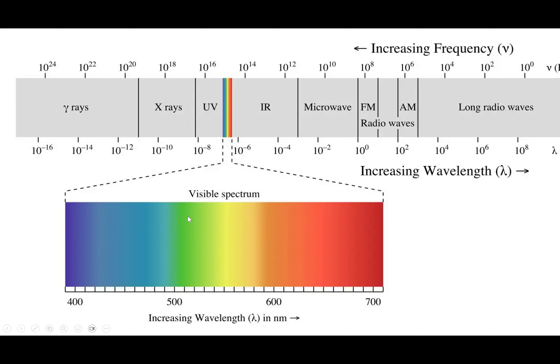Some interesting facts about this spectrum: microwaves can cause heating in body tissues — they're actually what we use to heat up food. They cause the rapid vibration of water molecules, which in turn dissipates heat to the rest of the body, tending to heat up food.